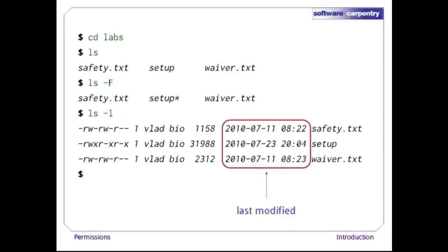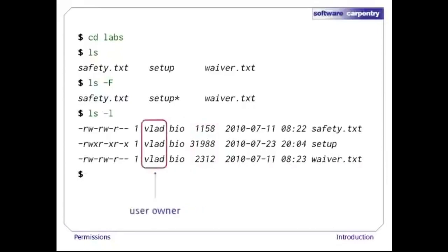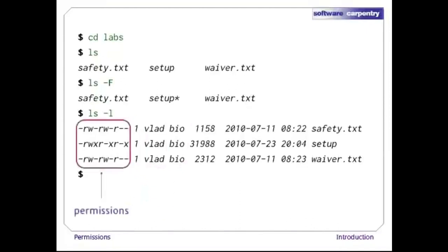Next to the modification time is the file's size in bytes. Next to that is the ID of the group that owns it, and of the user that owns it. The column on the left is the one we care about most — this shows the file's permissions, i.e., who can read, write, or execute it.